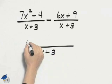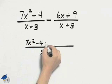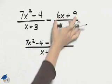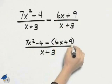We will subtract the numerators, so we'll have 7x squared minus 4. Subtract, now this is a quantity so we'll want to put 6x plus 9 in parentheses.